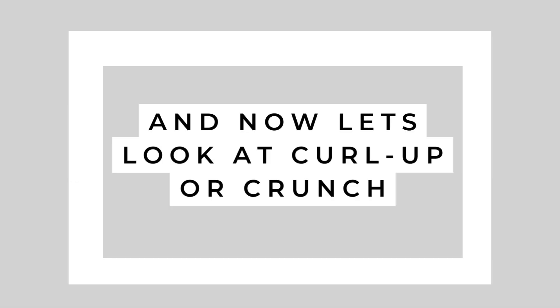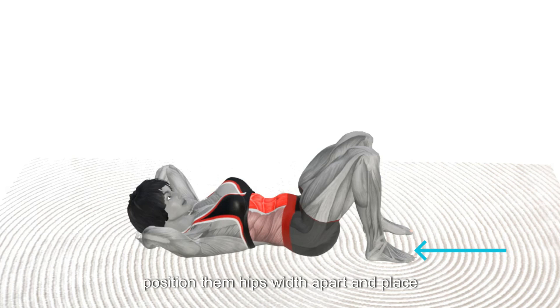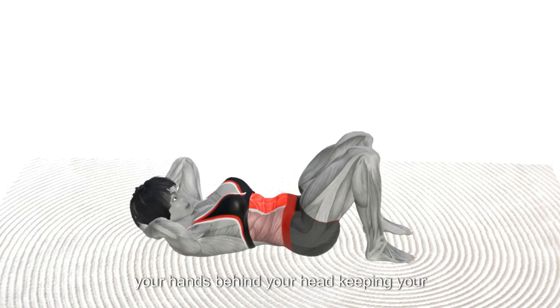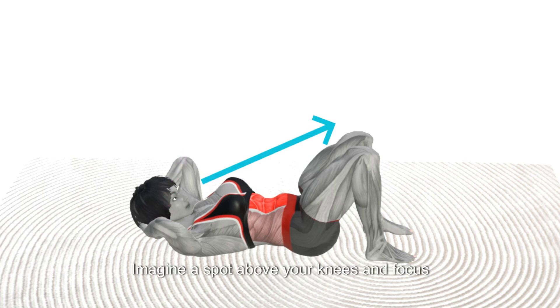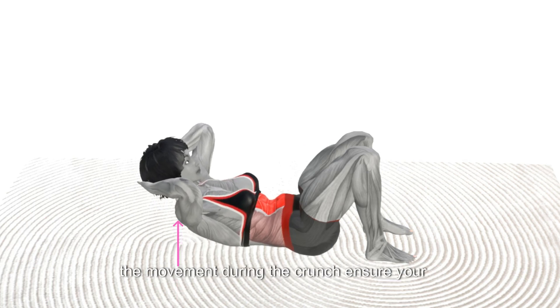And now let's look at curl-up. Lie down on a mat, bring your feet in, position them hips-width apart, and place your hands behind your head, keeping your elbows wide. Imagine a spot above your knees and focus on maintaining this gaze throughout, and elevate your chest to lift your shoulder blades off the mat and stop at the peak of the movement.